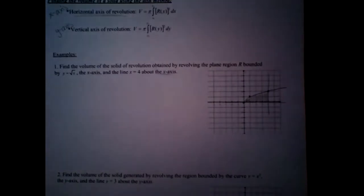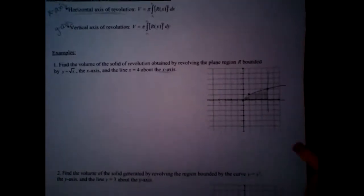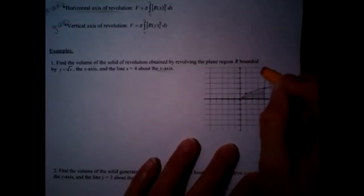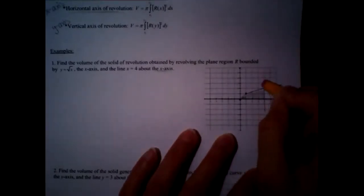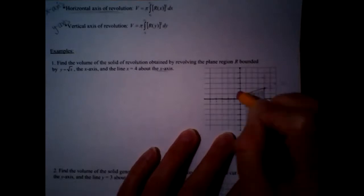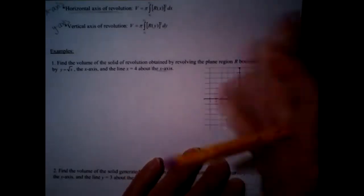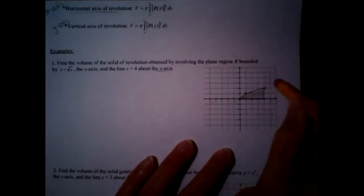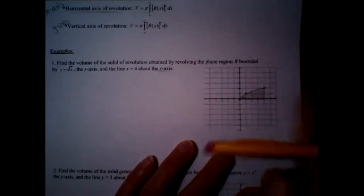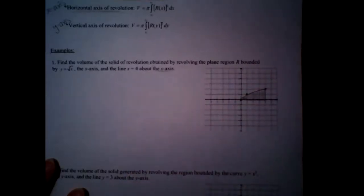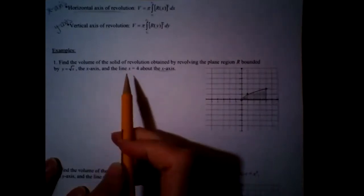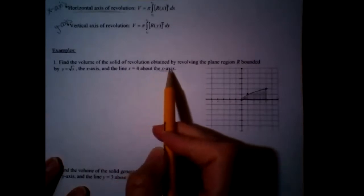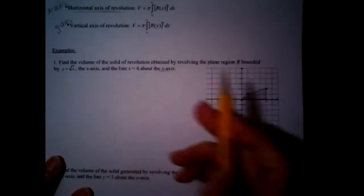My suggestion: erase everything outside of that shape — all the tail ends of the graphs — just to keep them from cluttering up the problem. You really want to look just at this region. What you want to do is show the revolution, what you're revolving around. We're going to spin this around the x-axis.